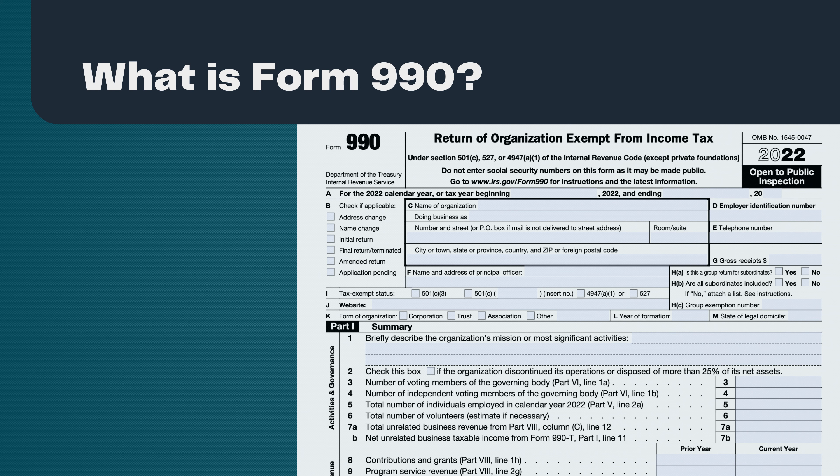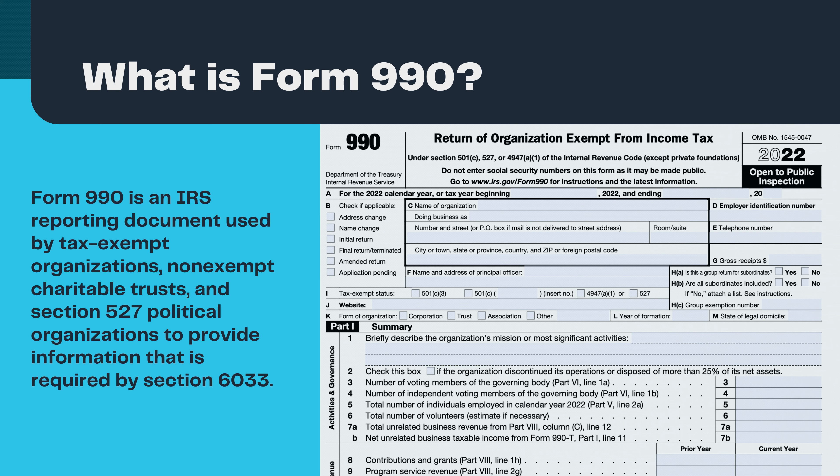What is Form 990? Form 990 is an IRS reporting document used by tax-exempt organizations, non-exempt charitable trusts, and Section 527 political organizations to provide information required by Section 6033.